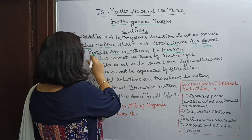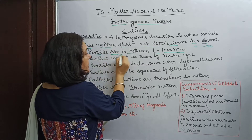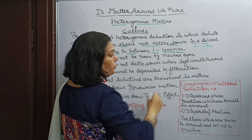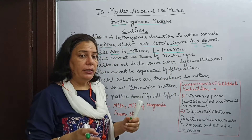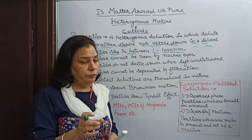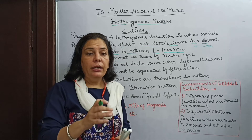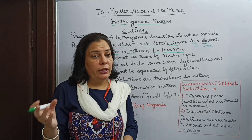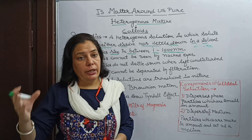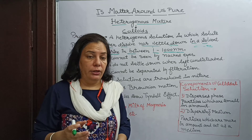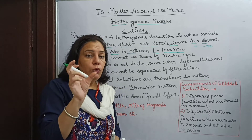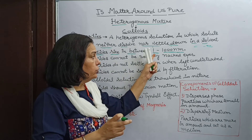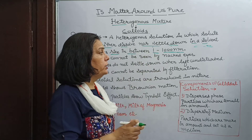The first property of colloidal solutions is particle size — in between 1 nanometer to 1000 nanometer. The particles are neither too small nor too large. If they were too small, they would uniformly dissolve; if too large, they would settle. But their size is in between, 1 to 1000 nanometer.